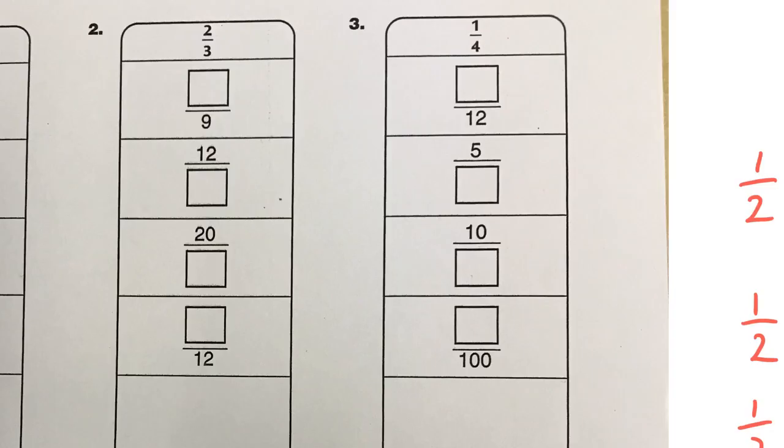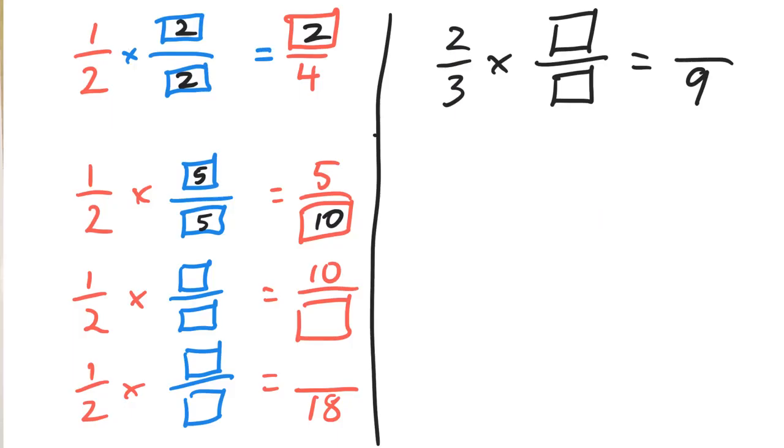And the other ones, you can just do exactly the same. So now we're talking about 2 thirds equals something ninths. So I know 3 times 3 is 9, and now I can fill in the rest there.